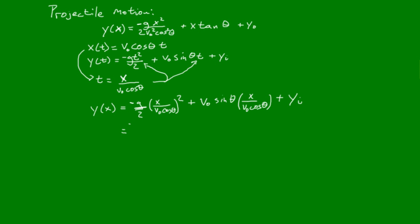Now all we have to do is simplify. So negative g, remember this squared is going to distribute over everything in the denominator and in the numerator. So it's going to be x squared over 2 times v naught cosine squared theta plus, now if we look at this one, this v naught, since all the terms in this are being multiplied, we can cancel the v naught. So that goes away and then we're left with sine theta x over cosine theta plus the initial y position.